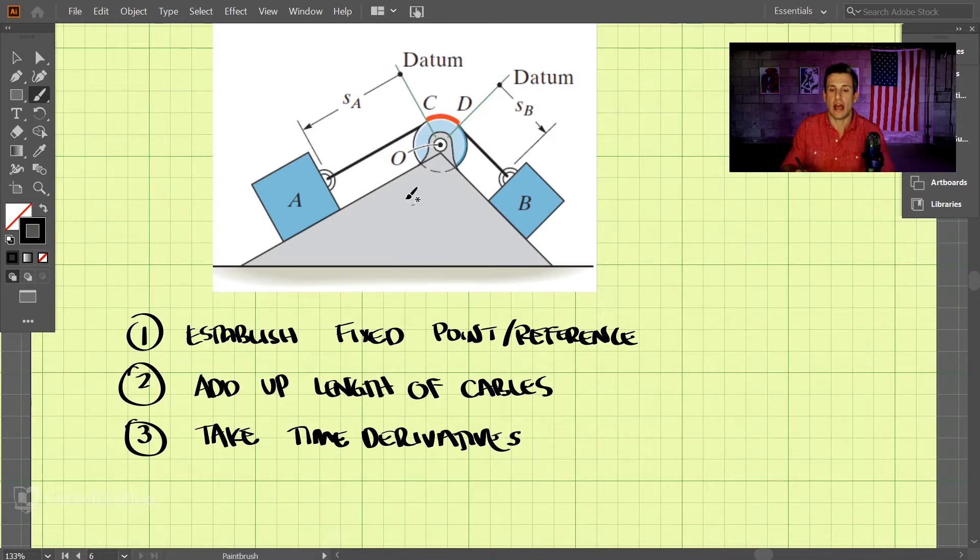So we have this simple system here, and we have specific steps that we need to go to. First step is establish a fixed point or reference. And in this system, point O is our fixed point of reference because it's not moving, it's staying stationary.